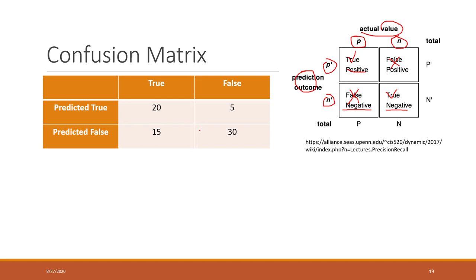Here is an example I used to predict house sales on the market — whether or not a house has been sold or has a contract. If the house is sold and the model predicts sold, that's true positive. If the house is not sold and we predict not sold, that's true negative. If the house was not sold but predicted as sold, that's false positive. If the house actually was sold but the model predicts it as not sold, that's false negative.